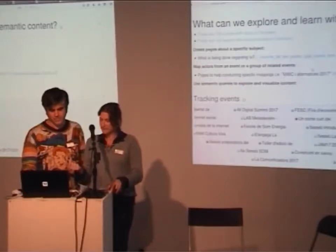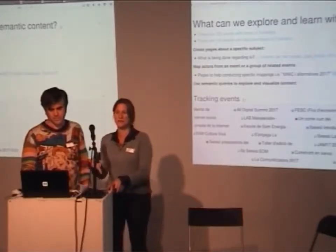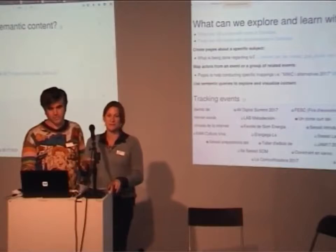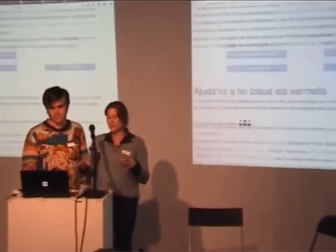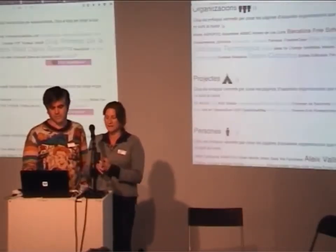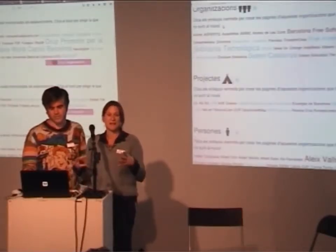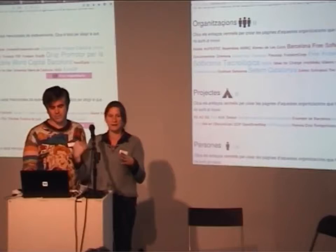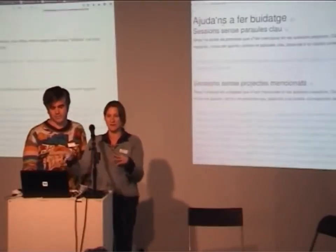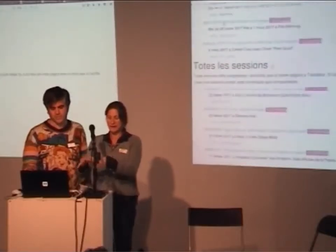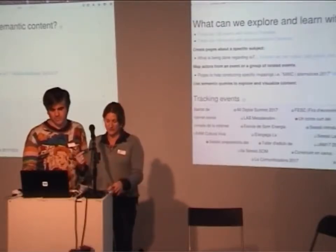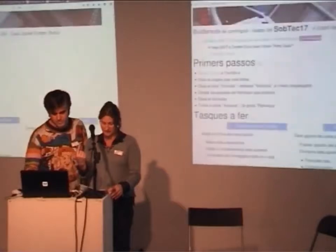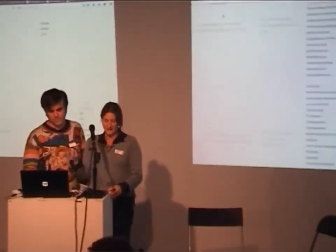We can also map actors from an event or a group of related events. The example we have here is during the Mobile World Congress in Barcelona. There's the Mobile World Congress and all these alternative events happening around it. We went to a few of them and other people went to others, and afterwards we met and filled in the information we had been collecting on Tashidora. Now we have all this classified information related to the Mobile Congress and the alternative events, with all the actors mapped.